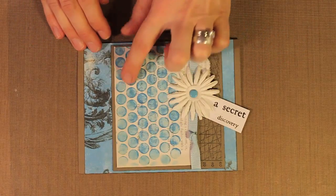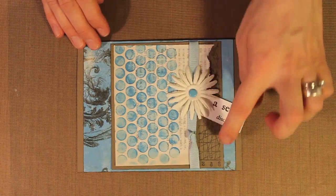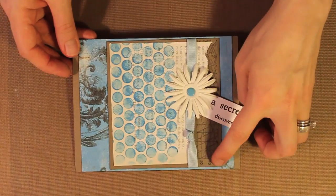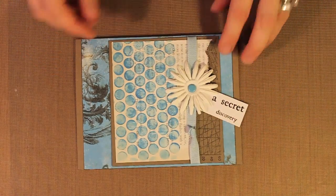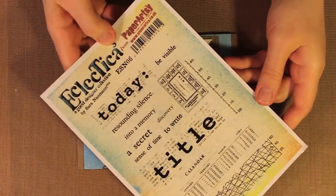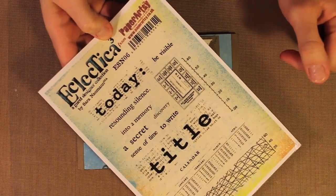So I've just simply put this piece down onto a piece of brown cardstock. Now this area here, this is a stamped border design. I think you can see that well on there and that is from the Eclectica stamp set. This is ESN 06, one that I designed for Paper Artsy,